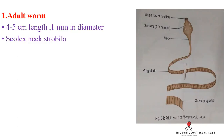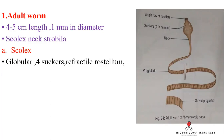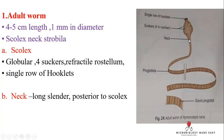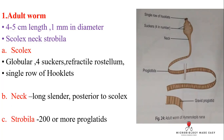The scolex is globular in shape with four suckers. There is a single row of hooks; the rostellum is present with hooks in a single row. Posterior to the scolex is the neck, which is long and slender. The strobila has approximately 200 immature, mature, and gravid proglottids.